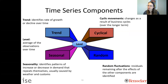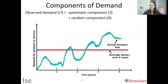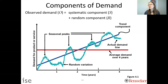The components of demand are: what we observe (what actually occurs), what we're able to predict — the systematic components — and then the random components. On this time series graph, the x-axis is time with repeatable periods, and we're predicting demand for a product on the y-axis.